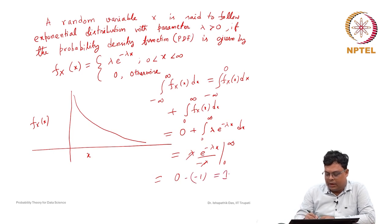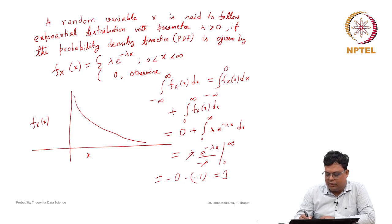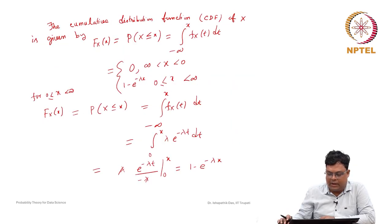At x = 0, this is 0. So it is minus 0 and then minus of minus 1, which equals 1. Now we have found that this is a valid density function. We will now find the mean and variance of this density function.